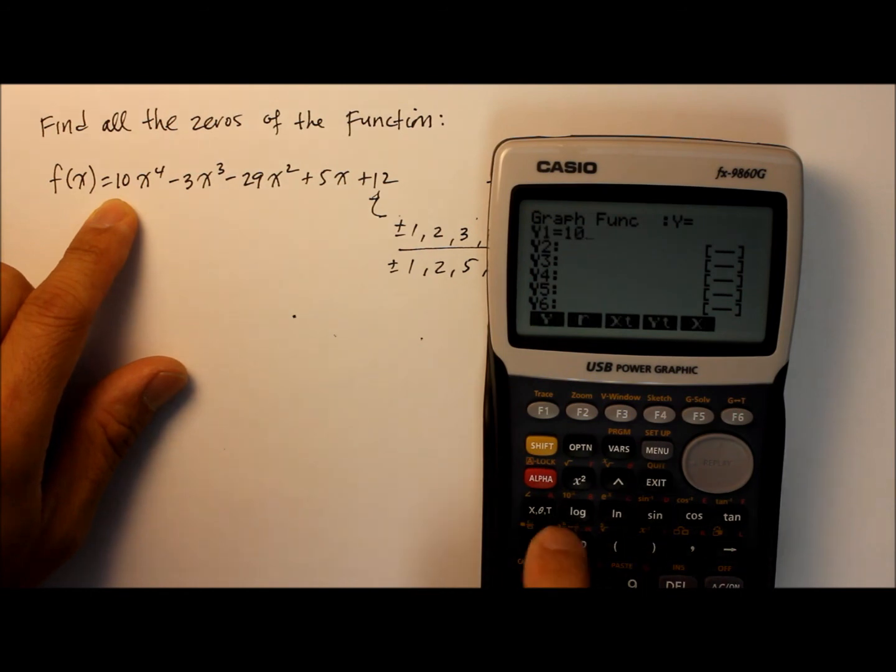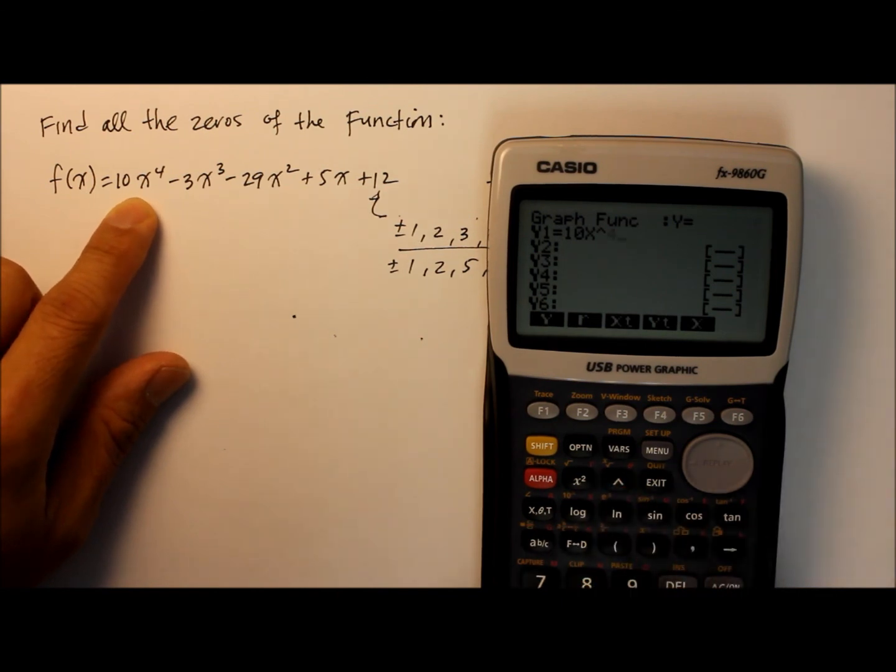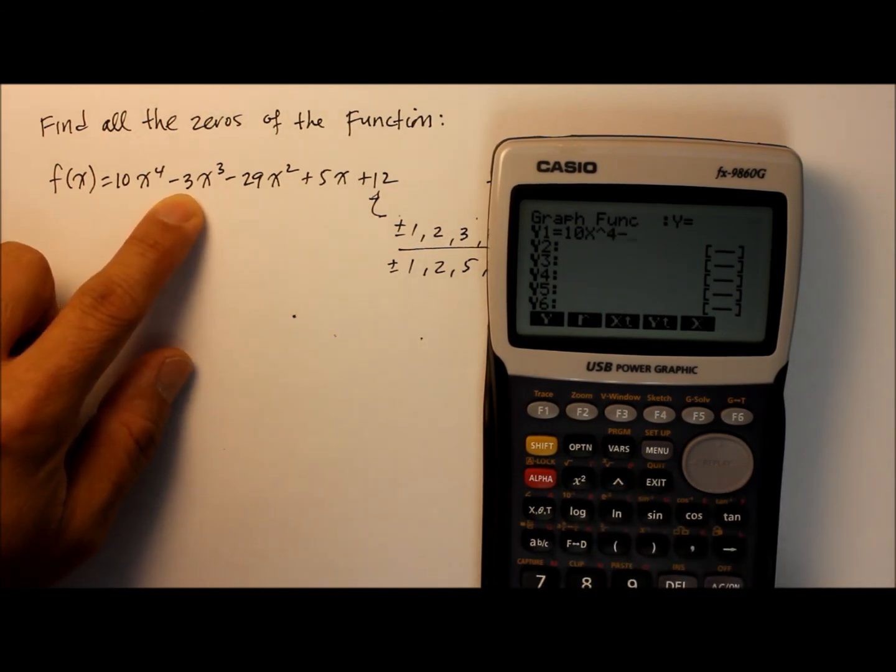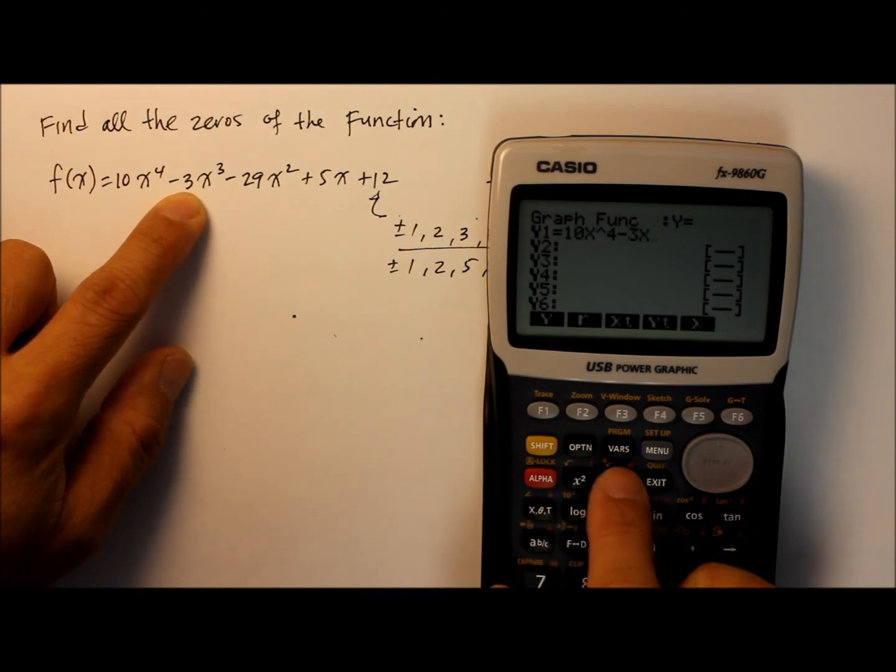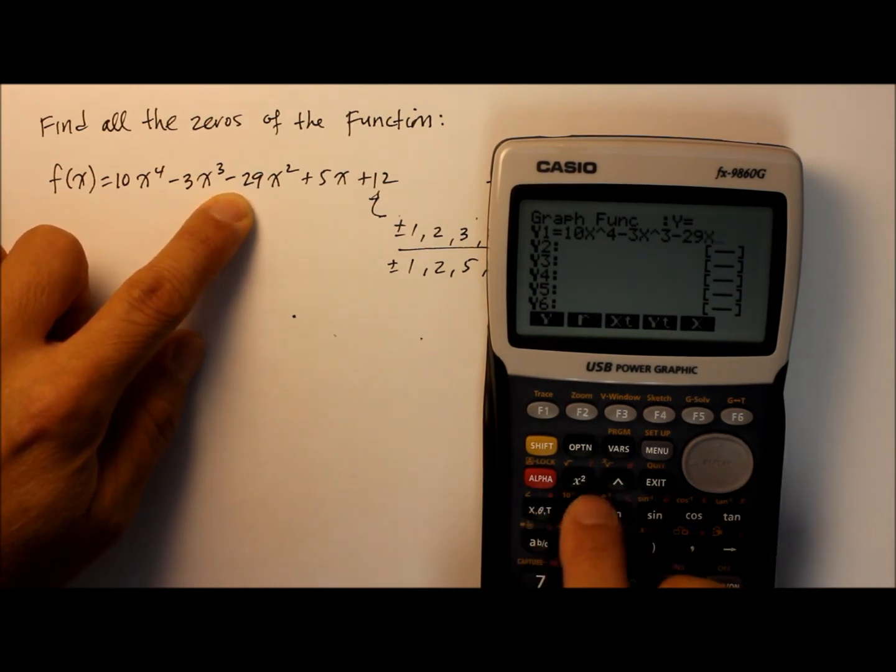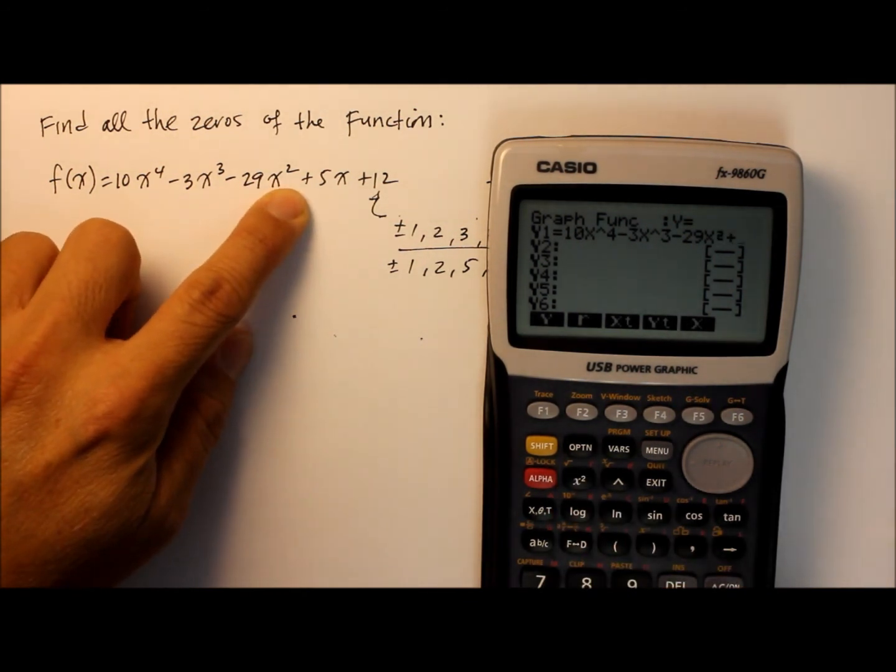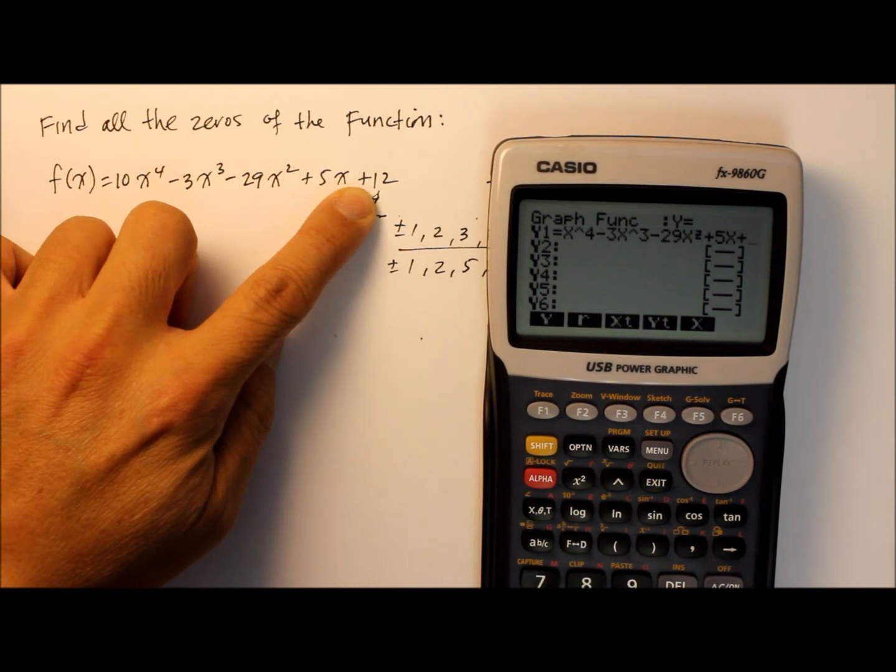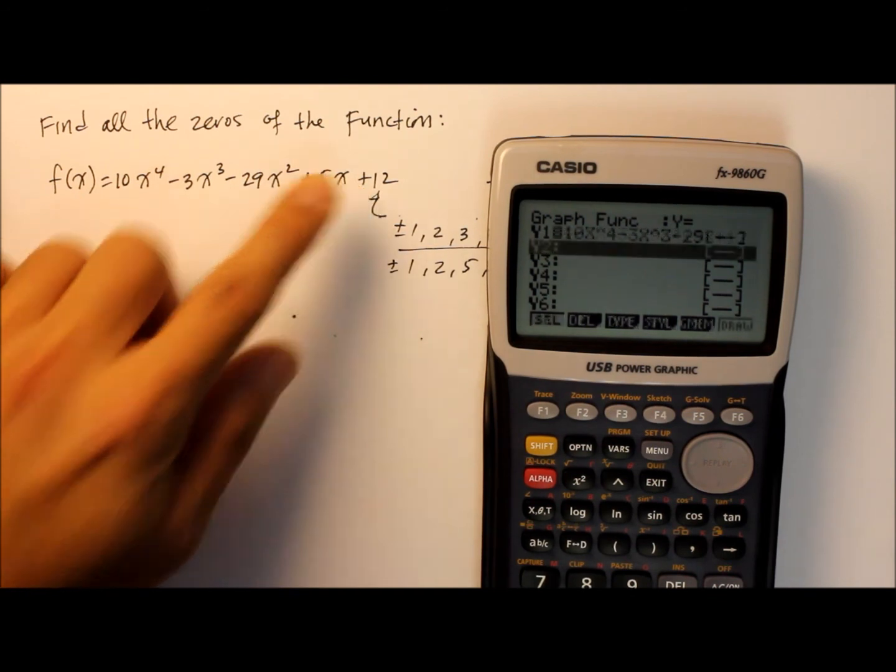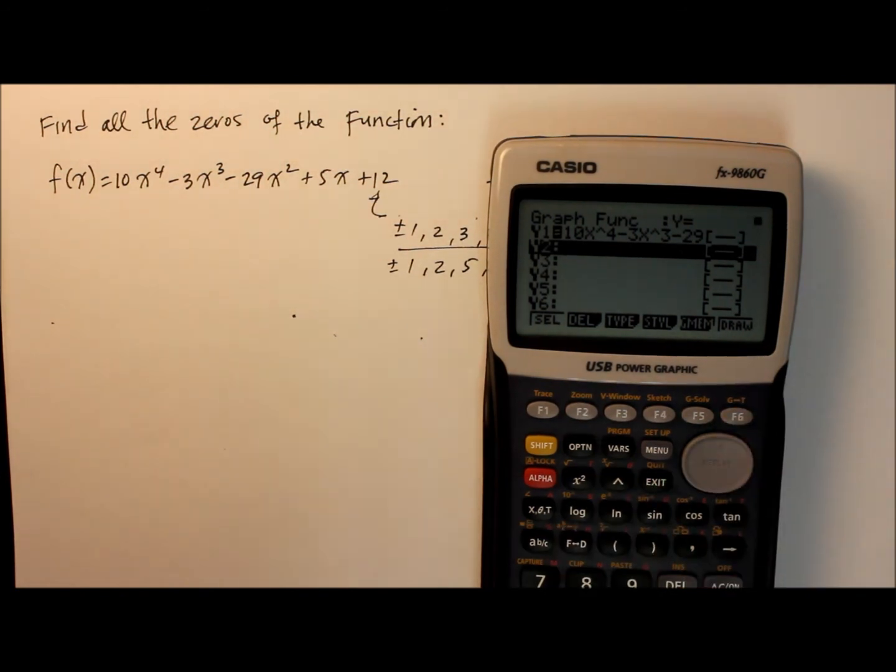It's in a form of a function already, f of x or y. Now let's put this in. 10 variable x, the caret or exponent 4, minus 3x raised to the third power, minus 29x squared, plus 5x, plus the constant 12. Enter. And this one says draw, so let's press that f key to draw, see what we get.